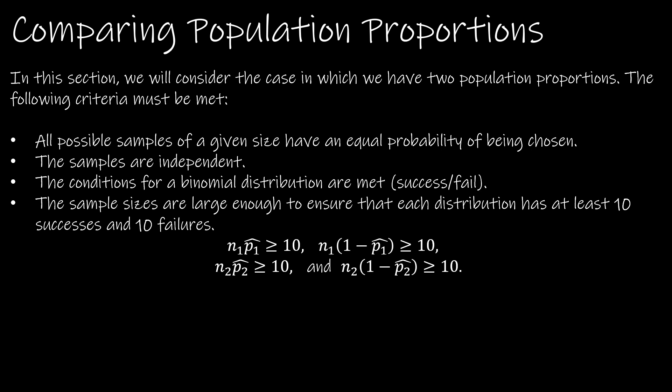The conditions are that we have random samples that are independent. The conditions for a binomial distribution are met, which means success and fail are the only two outcomes. And the sample sizes are large enough to ensure that each sample has at least 10 successes and 10 failures. Pretty straightforward, just as we had when we had one proportion.